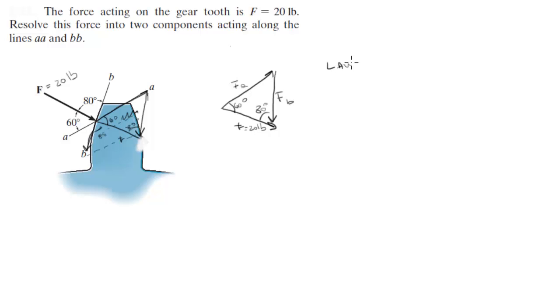All right, so the law of sines states that side a over sine of angle a is equal to side b over sine of angle b, which is equal to side c over sine of angle c.